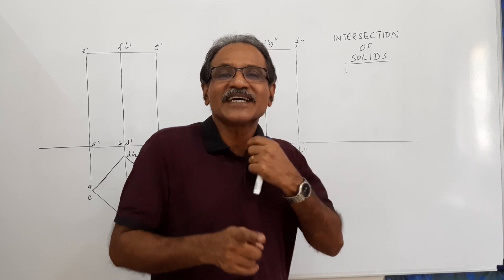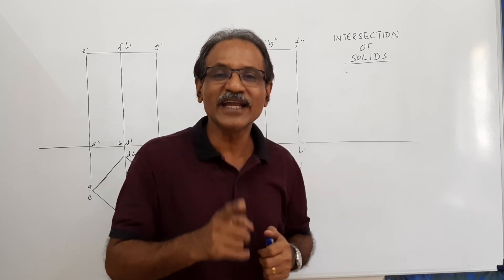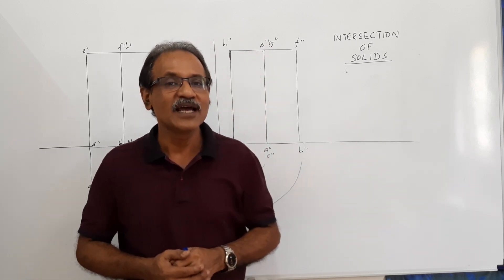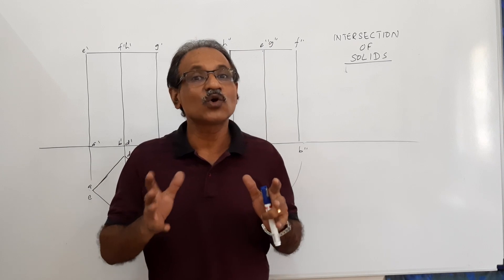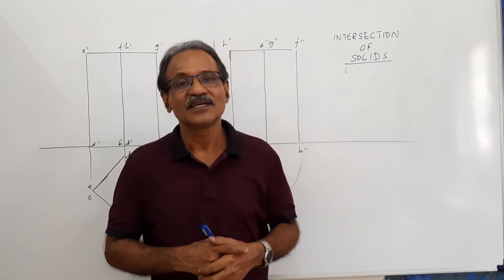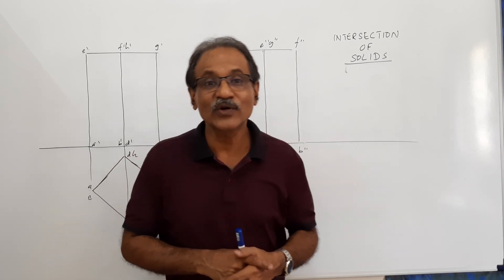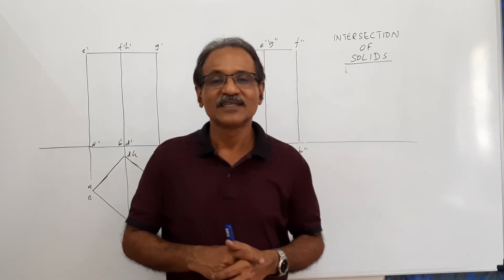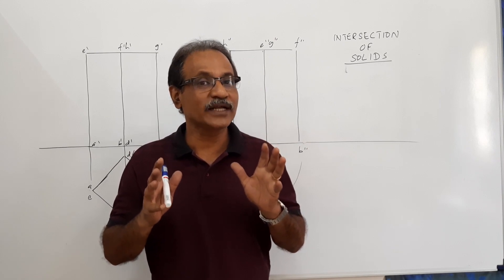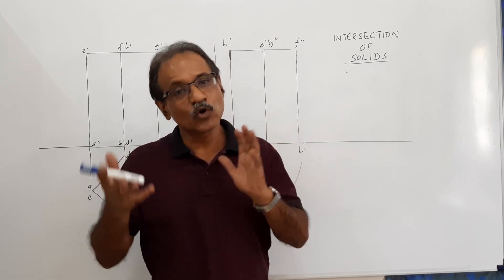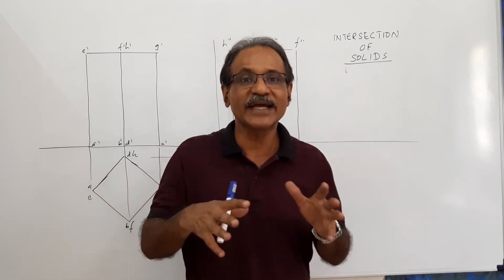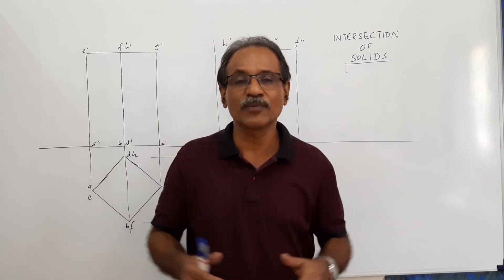So the intersection curve not only depends upon the shape of the two solids, but also on their orientation. The geometry of the solid is important, and the orientation with which both solids are configured is also important.